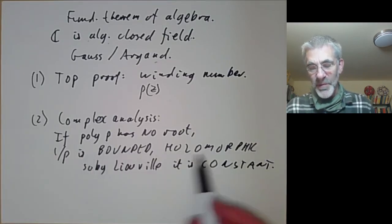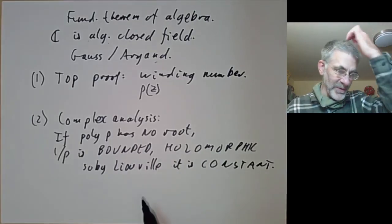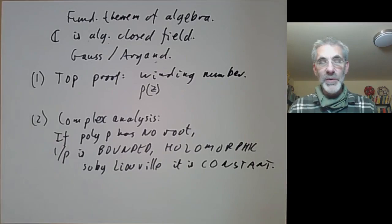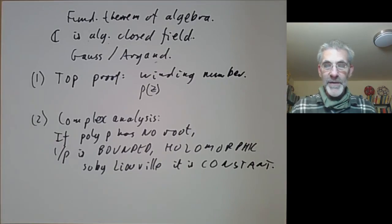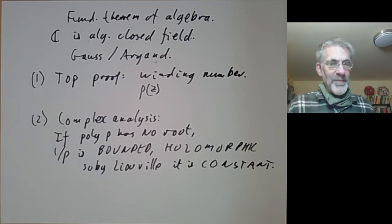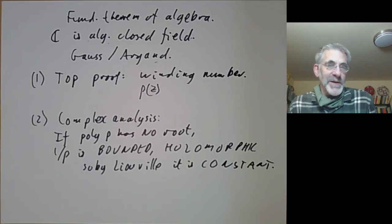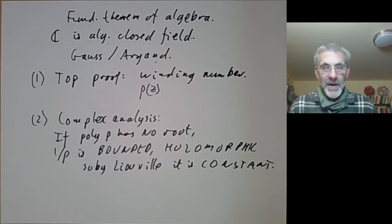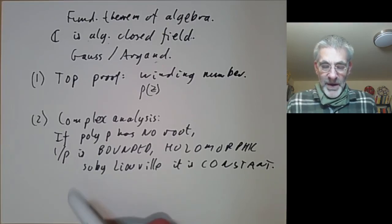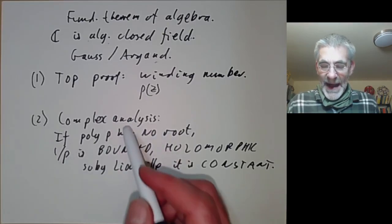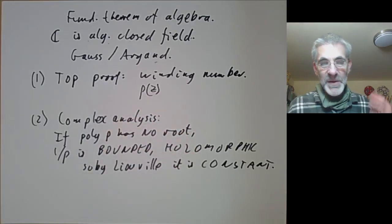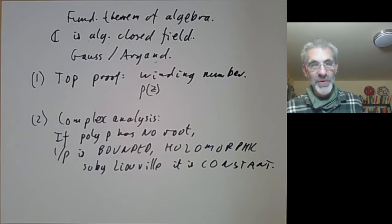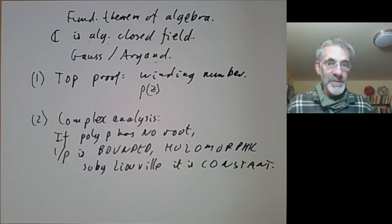There we've got a proof that would be one line long if I wrote slightly smaller letters. So if we've got two perfectly good proofs why do we need another proof? Well it's a bit embarrassing to have something called the fundamental theorem of algebra only proved by using analysis or even worse topology. If something's called the fundamental theorem of algebra you really want it to have an algebraic proof just for the pride of your subject.